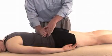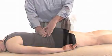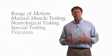First, we'll start with subjective evaluation. We'll give you general questions and then specific questions for each region of the body. The second part will be objective testing, which will include range of motion, manual muscle testing, neurological testing, special testing, and palpation.